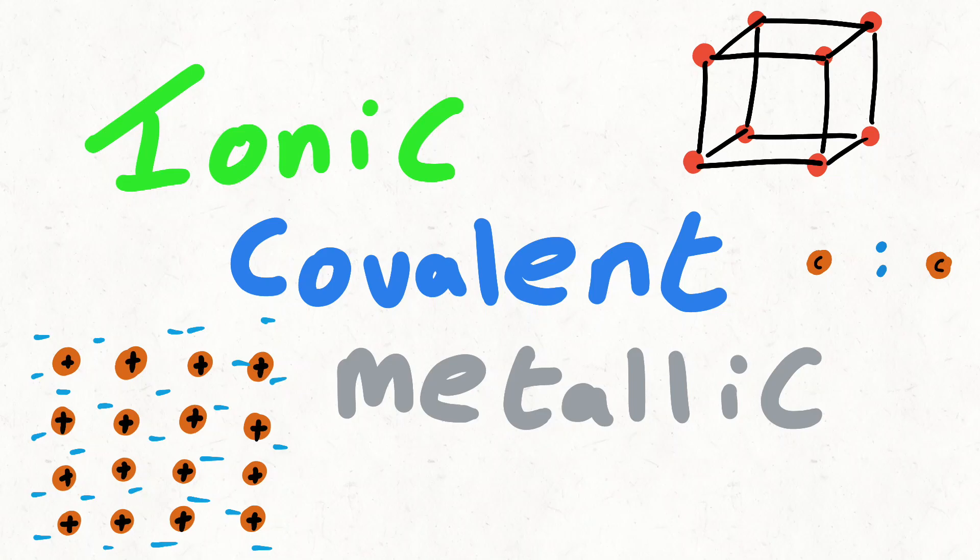A compound is where atoms of different elements are bonded together. They can do this through ionic, covalent, and metallic bonding.